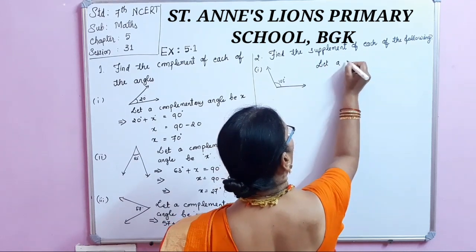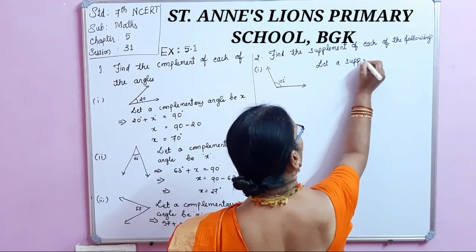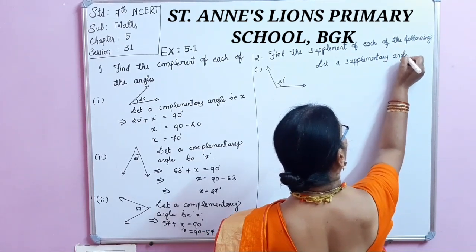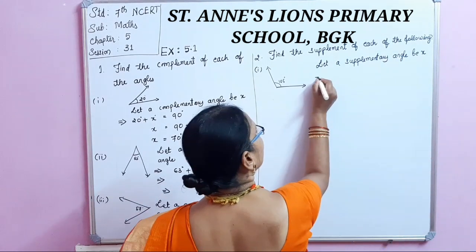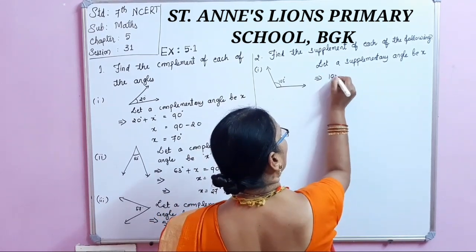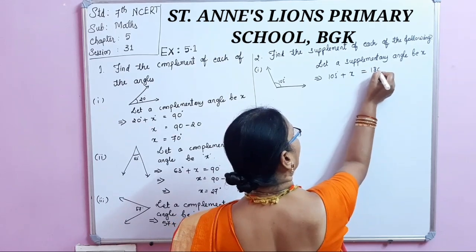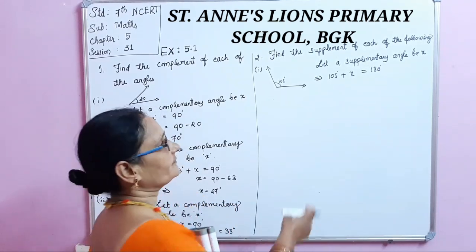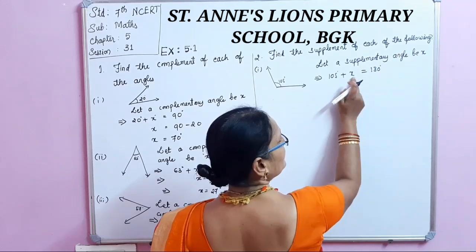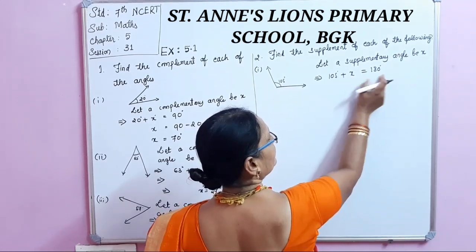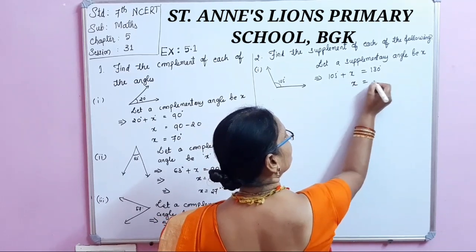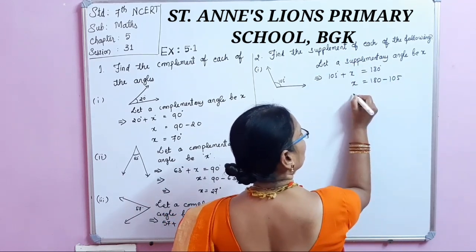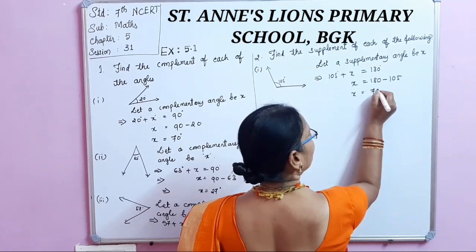Let the supplementary angle be X. Then 105 plus X equals 180 degrees — because supplementary angles must sum to 180 degrees. So X equals 180 minus 105, which gives X equals 75 degrees.